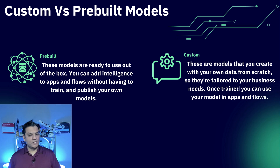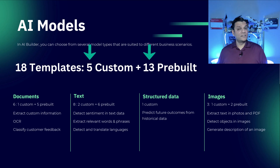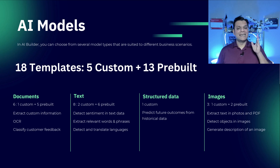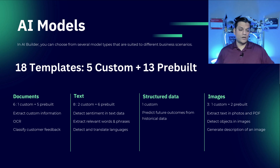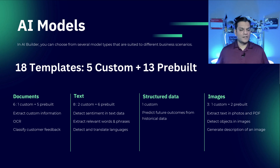Keep in mind that custom models definitely need to be trained and then published. In total there are 18 templates: 5 custom and 13 pre-built. All these models break down into four different categories: documents, text, structured data, and images. For example, in the documents category there are 6 models — one custom and five pre-built. Microsoft has already put in work to help you get started more easily, specifically with the pre-built ones.